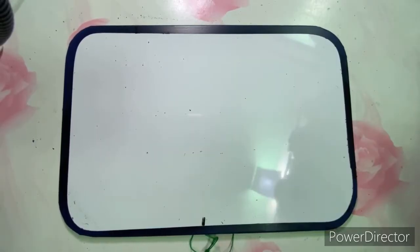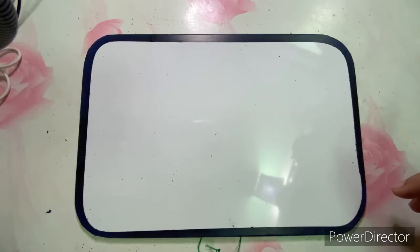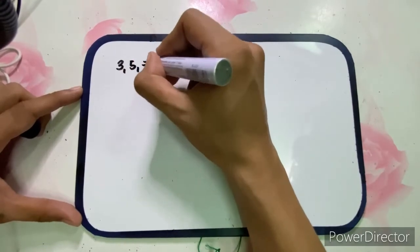A recursive formula of an arithmetic sequence is a formula that designates the starting term or the first term, which is a sub 1, and the nth term of the sequence, which is a sub n, as an expression containing the previous term — that is, a sub n minus 1.